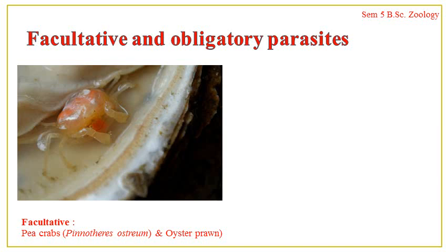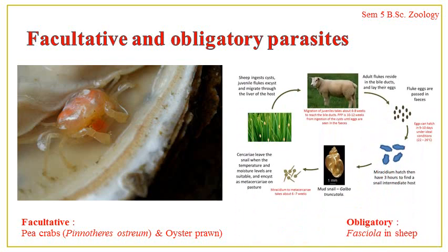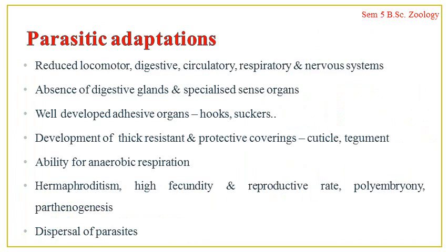Obligatory parasites, also called compulsory parasites, are organisms which can live only as parasites, depending exclusively upon their host. Most endoparasites are obligatory parasites. For example, Fasciola completes its life cycle in two different hosts — a snail and a sheep — and if it doesn't reach the appropriate host at the proper stage, it cannot complete its life cycle and dies. That is the distinction between facultative and obligatory parasites.